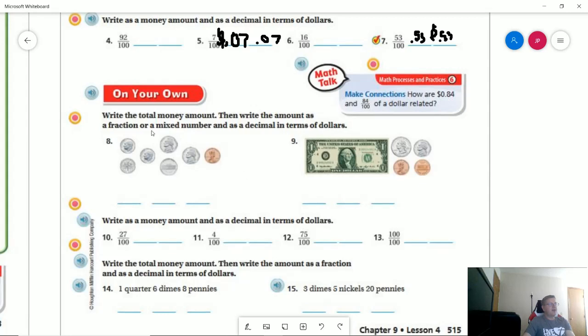So if I write this as a decimal, that would give me 1.32. And then the same thing for writing that with the dollar sign. If I write it as a mixed number, I would have 1 and 32 over 100.